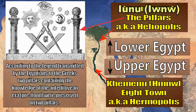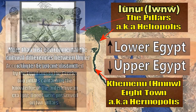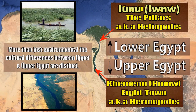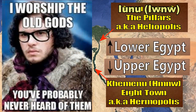The Greeks were told about the Atlantis flood, and according to the legend transmitted by the Egyptians to the Greeks, two pillars containing the knowledge of the antediluvian pre-flood era were preserved on two pillars that would survive a flood. More than just the environment, the cultural differences between upper and lower Egypt are quite distinct, and we see them in these important spiritual and cultural capitals: Heliopolis in lower Egypt and Khemenu or Hermopolis in upper Egypt.